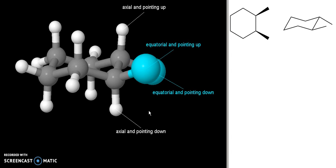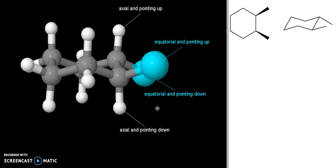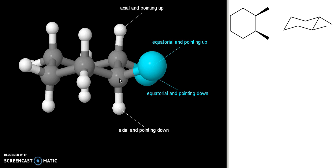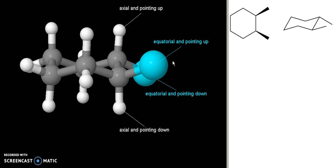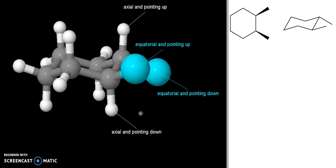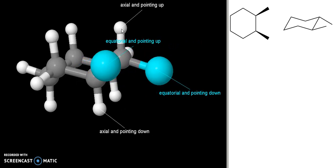It's usually really easy to tell whether the axial group is up or down. For instance, this axial group is pointing down, this equatorial group is pointing slightly up. If I go to the other carbon, this axial group is pointing up, this equatorial group is pointing slightly towards the down.